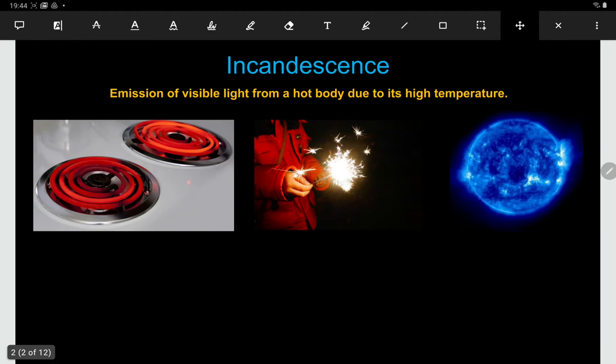To start understanding this we have to think about a phenomenon called incandescence. Incandescence is where an object will emit visible light when it gets to a high temperature. If you get an object and take it above about 800 Kelvin, it will start to glow red hot, and that's true of pretty much any object.